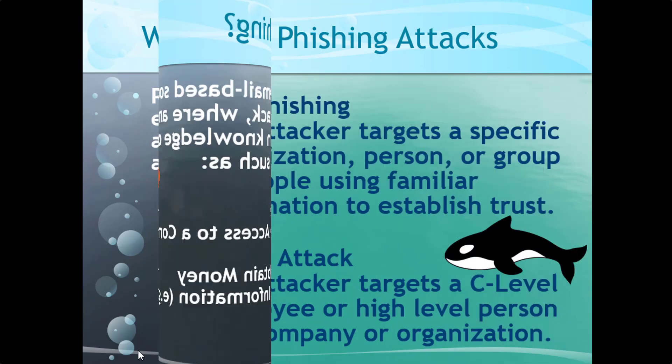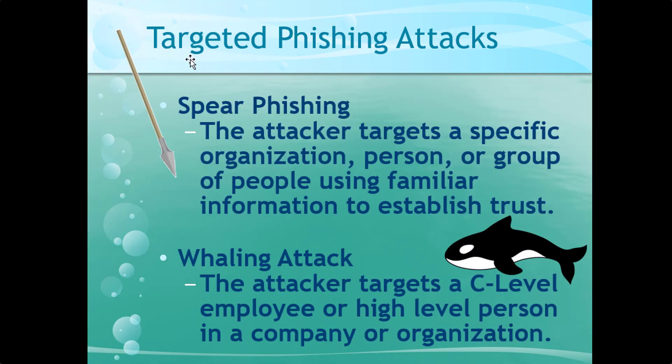Spear phishing is where the attacker targets a specific organization, person, or group of people using familiar information to establish trust. Whaling is where they attack the C-level — your CEO, financial officers, CIOs, chief operations officer, chief technology officer — all the important people. Those are your whaling attacks when they're targeted just to those people.